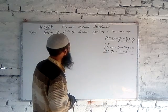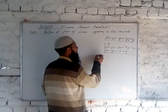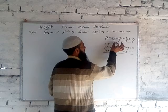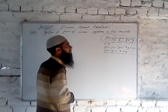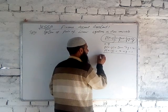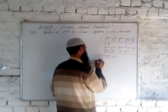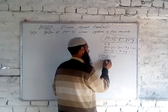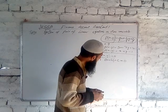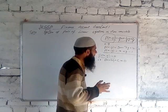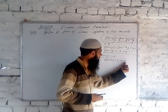Now for the main topic, we first define a linear equation in two variables. For this, we take a restriction over the linear polynomial in two variables: p(x, y) = 0, that is, ax + by + c = 0. This is called a linear equation in two variables.